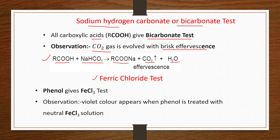Next is the ferric chloride test. Phenol (C₆H₅OH) gives the FeCl₃ test. A violet color appears when phenol is treated with neutral FeCl₃ solution.